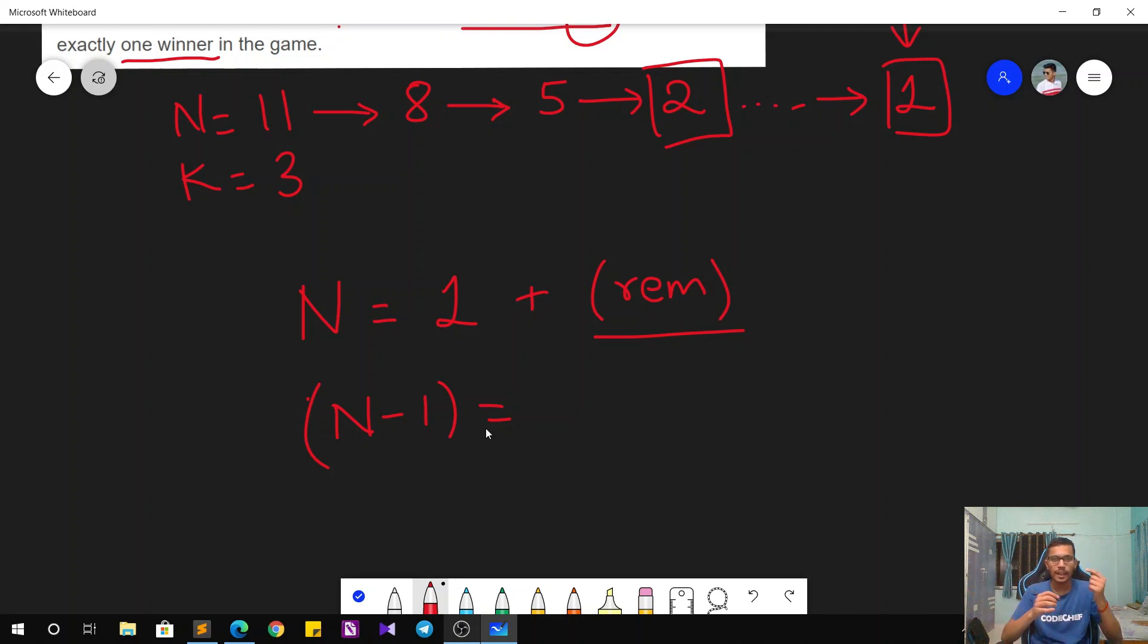Okay, so N minus 1 total chairs have to be removed in the game if there has to be exactly one winner, right? There were initially N chairs, in the end we have only one chair, so a total of N minus 1 chairs were removed during the game. So N minus 1 should be a multiple of K. What does that mean? If N minus 1 is a multiple of K, it means that K is a divisor of N minus 1.